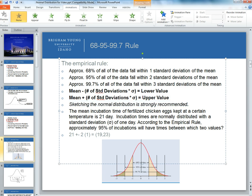Now here's an example of a problem where the mean incubation time of a fertilized chicken egg kept at a certain temperature is 21 days. Incubation times are normally distributed with a standard deviation of 1 day. According to the empirical rule, approximately 95% of incubations will have times between which two values? So we're doing it with 95% of the data, so that falls within two standard deviations away from the mean.